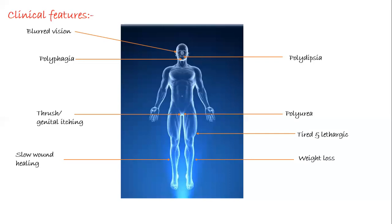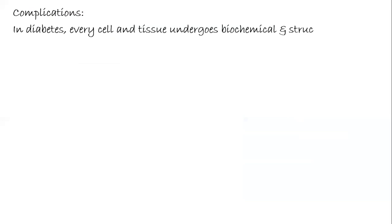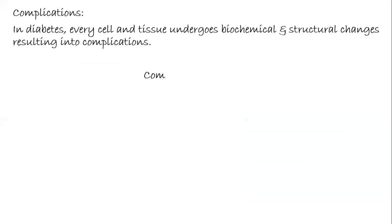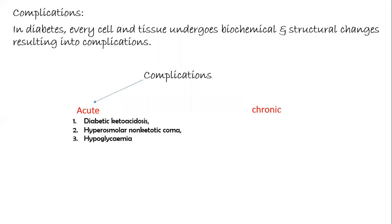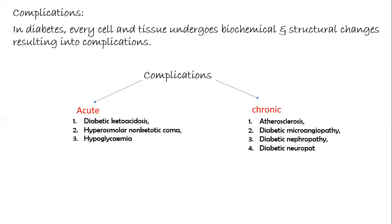There is weight loss in these patients. In diabetes, every cell and tissue undergoes biochemical and structural changes resulting in complications. There are two types: acute complications — including diabetic ketoacidosis, hyperosmolar non-ketotic coma, and hypoglycemia — and chronic complications — including atherosclerosis, diabetic microangiopathy, diabetic nephropathy, diabetic neuropathy, diabetic retinopathy, and susceptibility to infections.